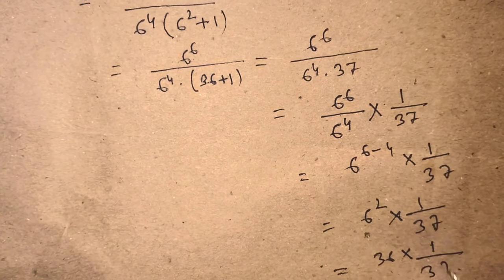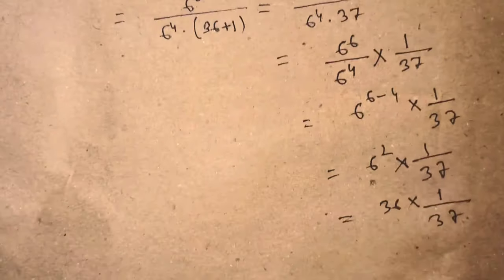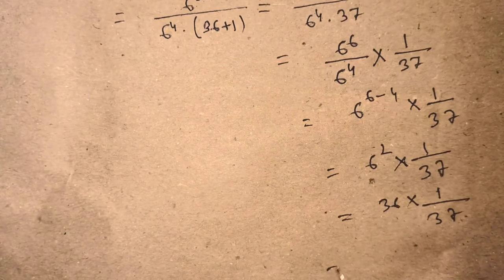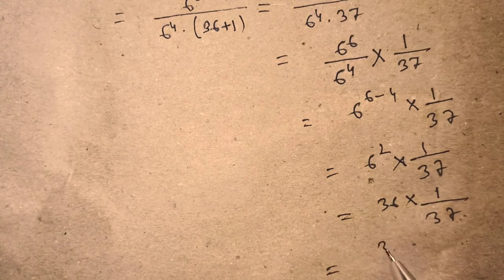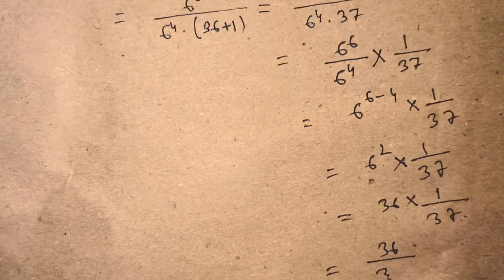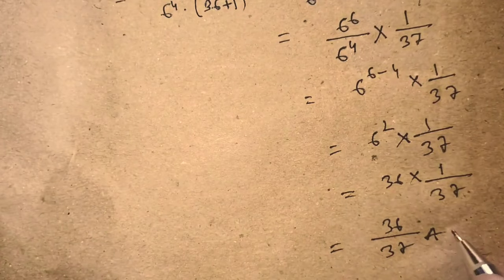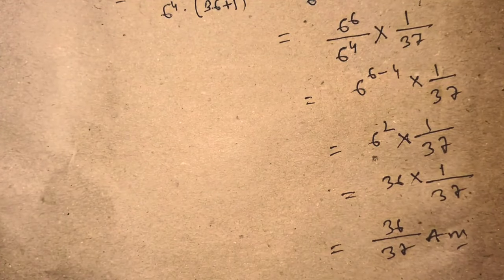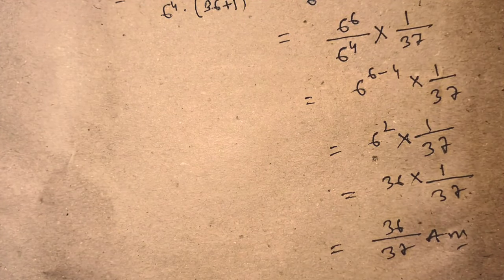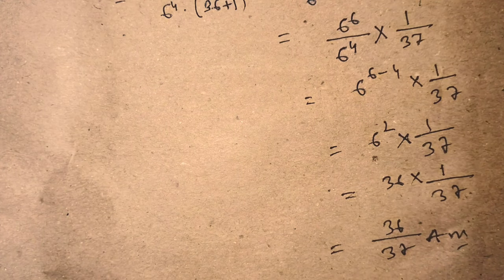So 6 squared is 36, and 36 times 1 over 37 gives us 36 over 37. This is our final answer. If you like this video and this trick, please support me and subscribe to my channel. Thank you, bye bye.